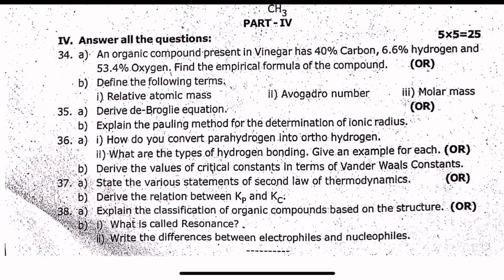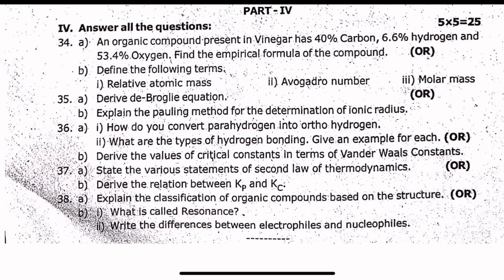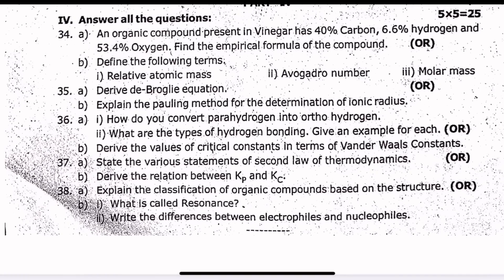Atomic mass, atomic mass, molar mass — all the definitions are there for you to use. De Broglie equation — direct 5 mark. Pauling method for determination of ionic radius. How do you convert para-hydrogen into ortho-hydrogen? What are the types of hydrogen bonding? Give an example for each — that is 5 mark. Values of critical constants, the Van der Waals constant — direct 5 mark.